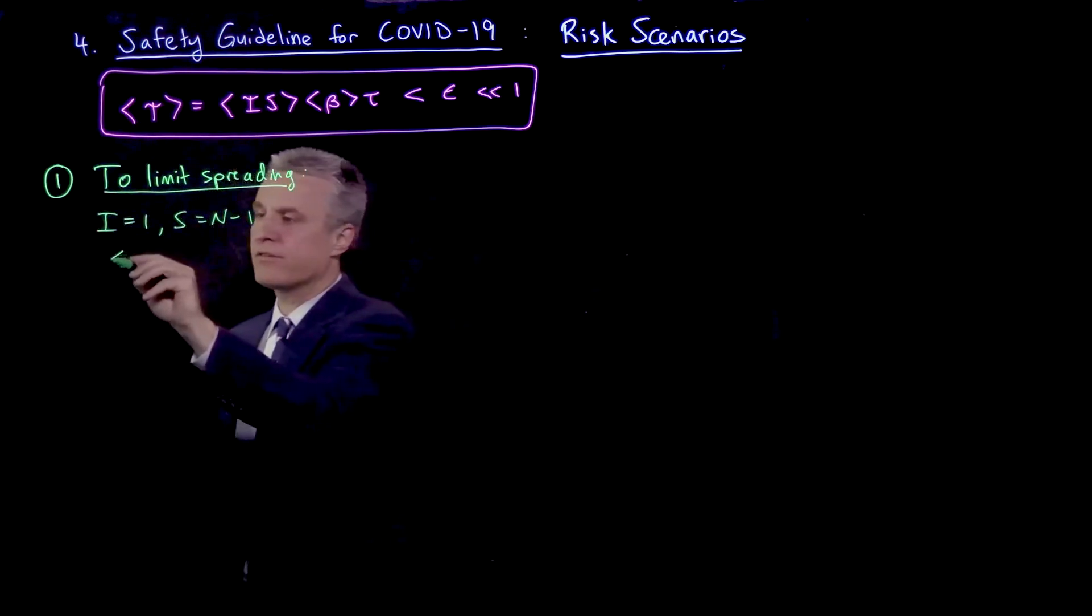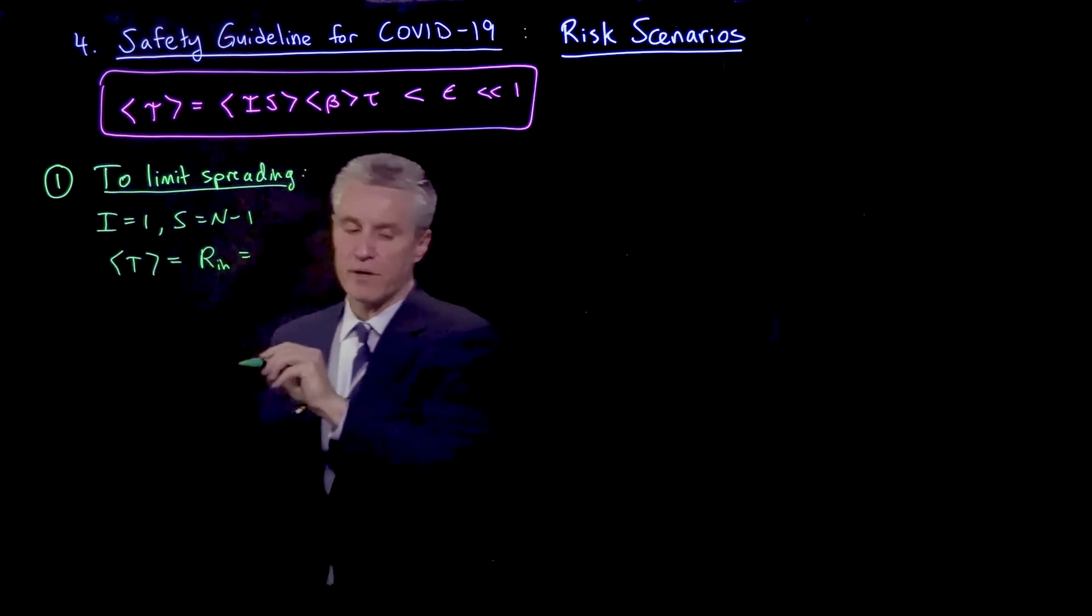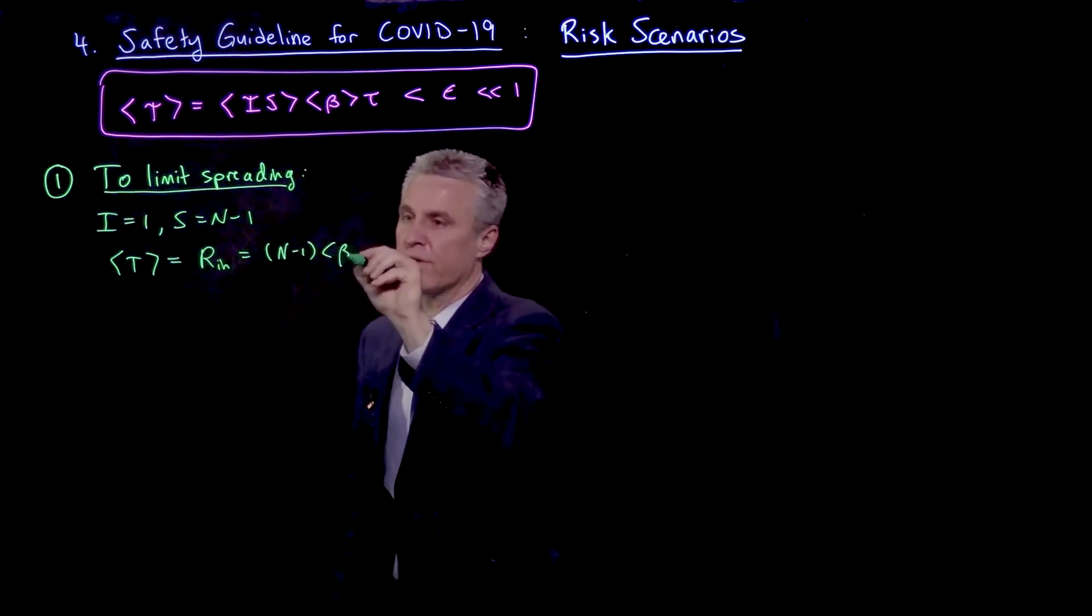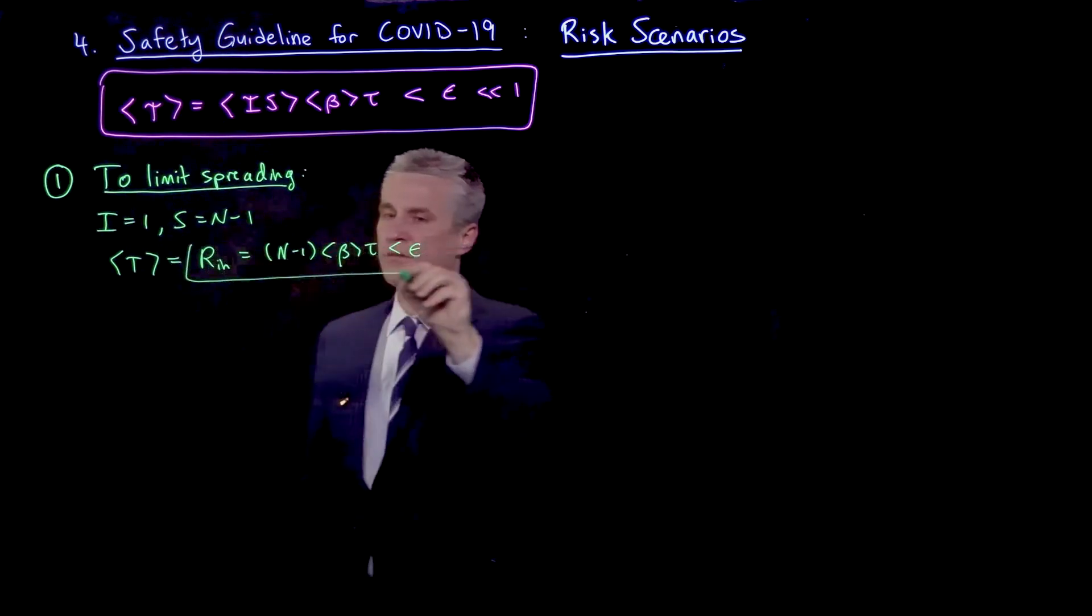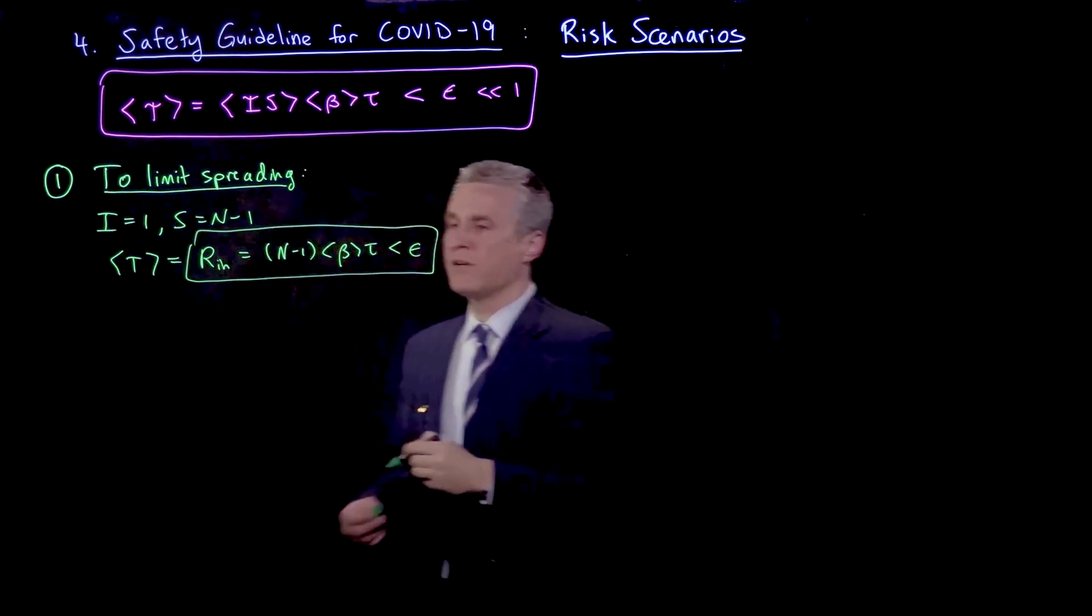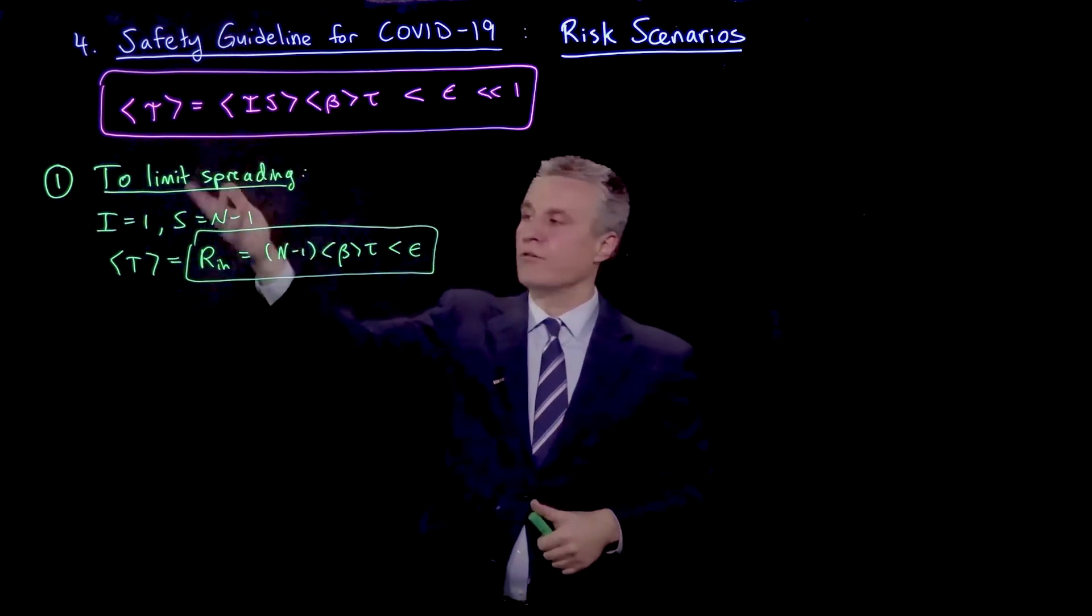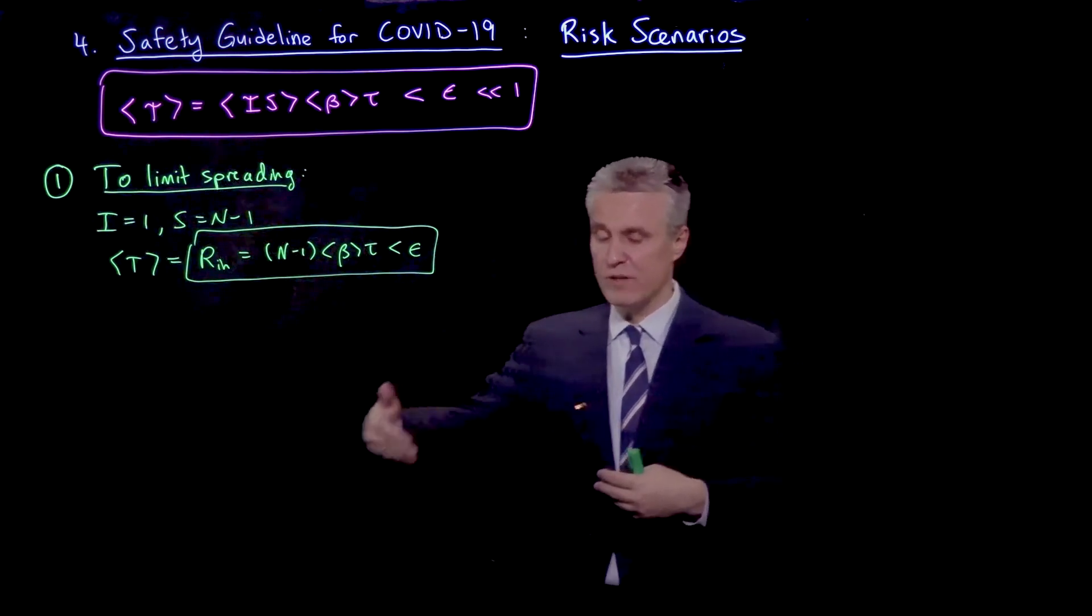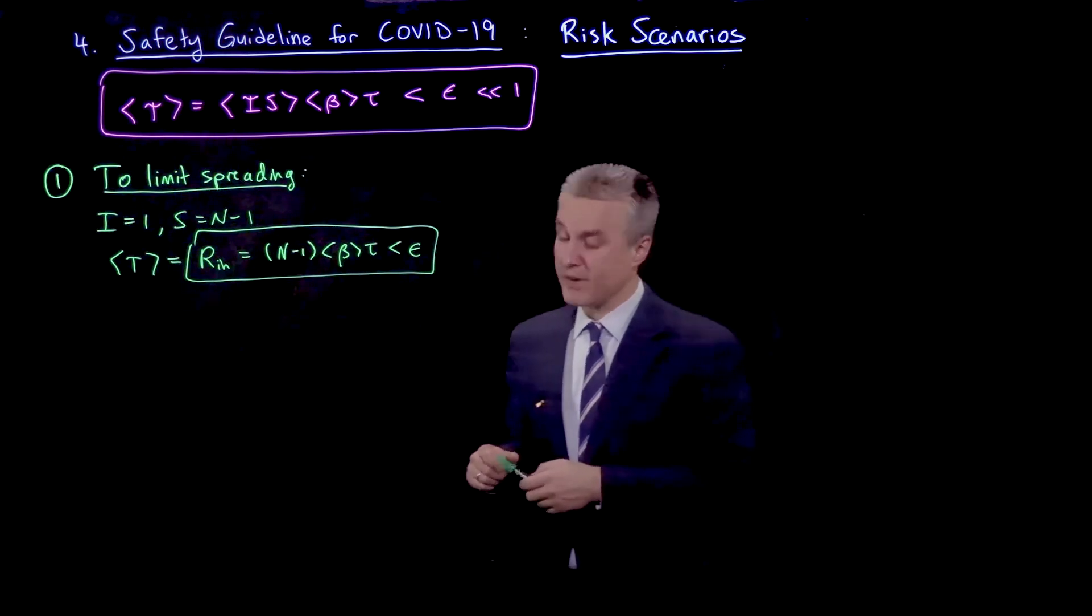And then this expected number of transmissions is just the indoor reproductive number, which is of course just N minus 1 times beta tau is less than epsilon. So that's the guideline that we've already been talking about. Because the I and the S here are now actually no longer random, we're just saying let's just consider that situation. And if everybody does that, then we are limiting the spread of the disease overall and should be hopefully fighting it.